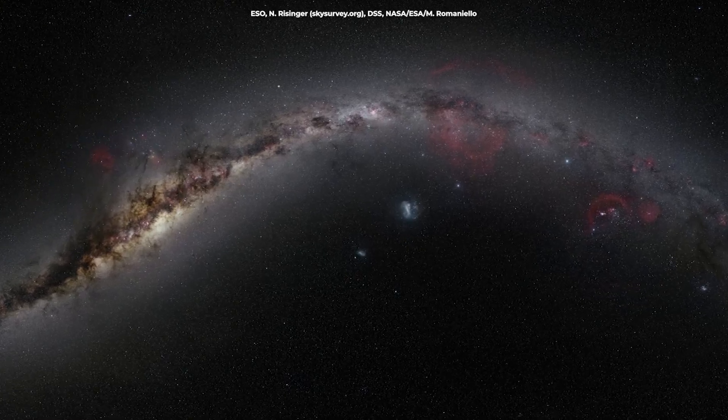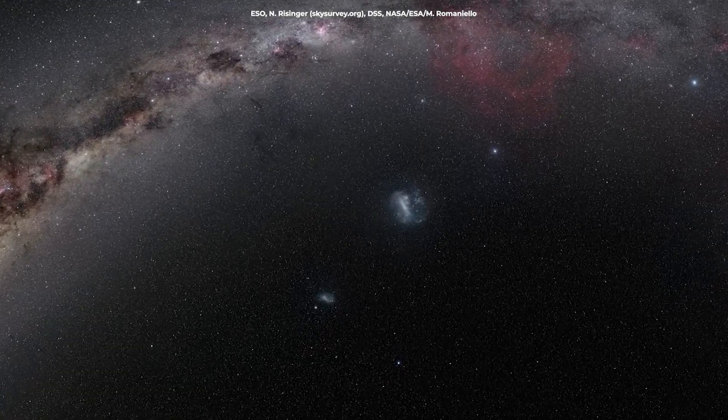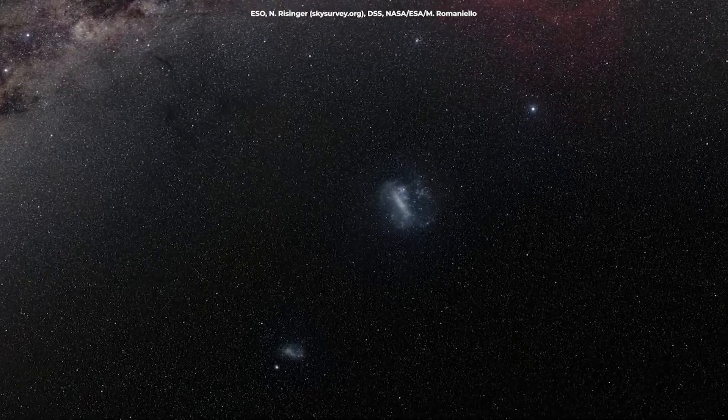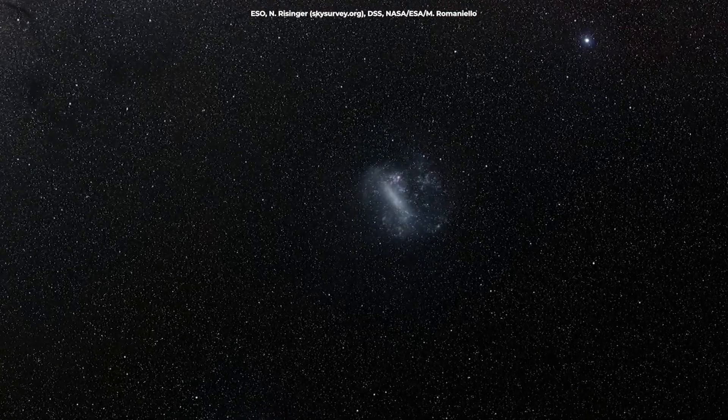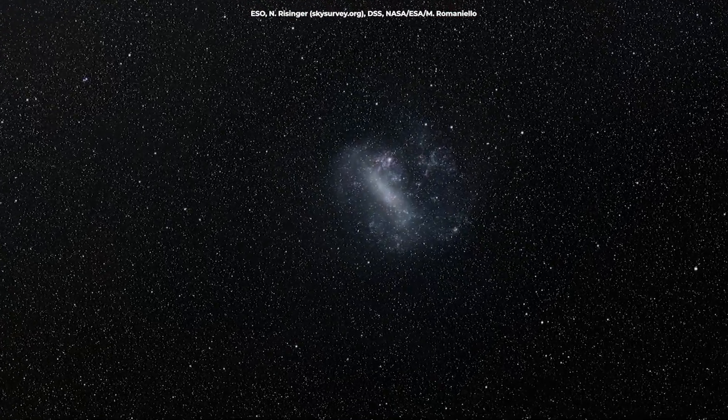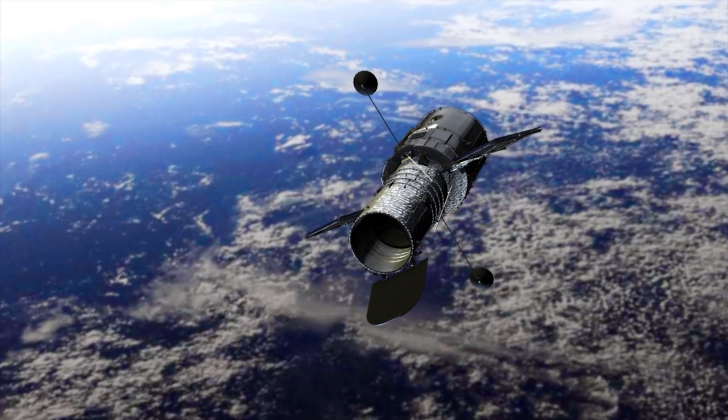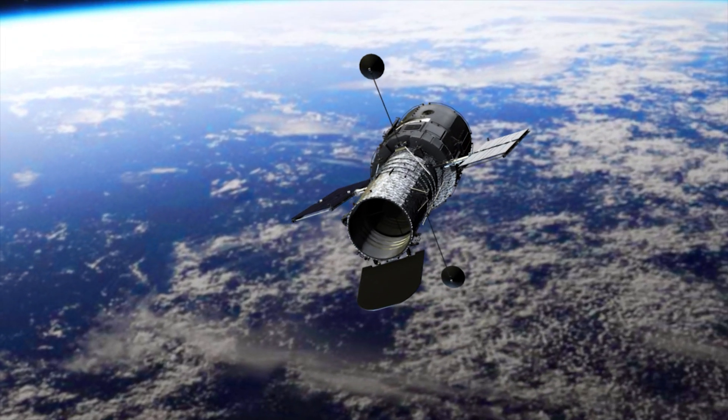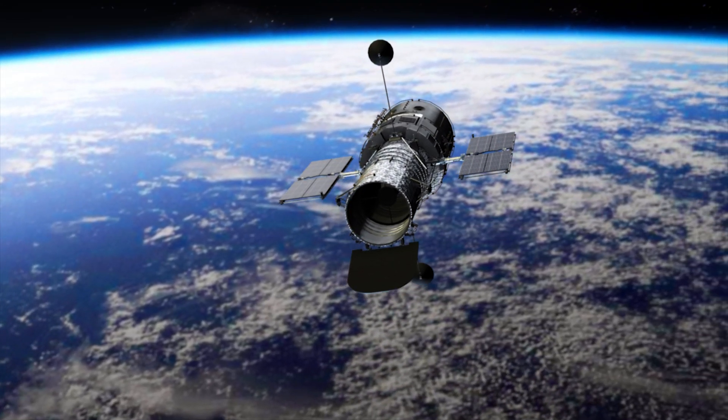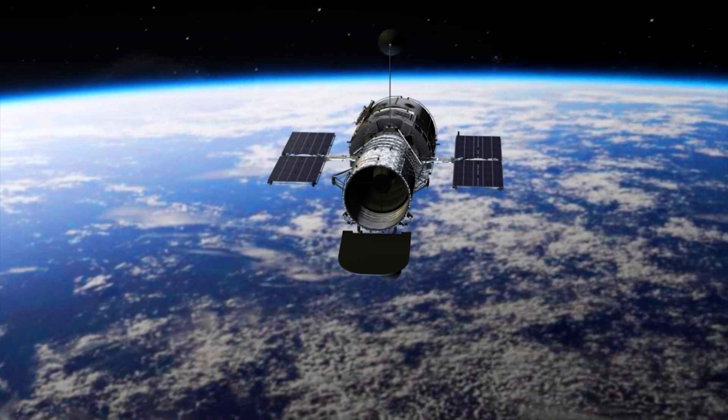But how exactly did scientists figure all this out? How do you see something that's invisible? That was the challenge scientists faced. Hubble didn't just stumble onto this discovery. It used one of the most clever tricks in astronomy. Because when you're trying to see invisible gas in space, you need to get creative.